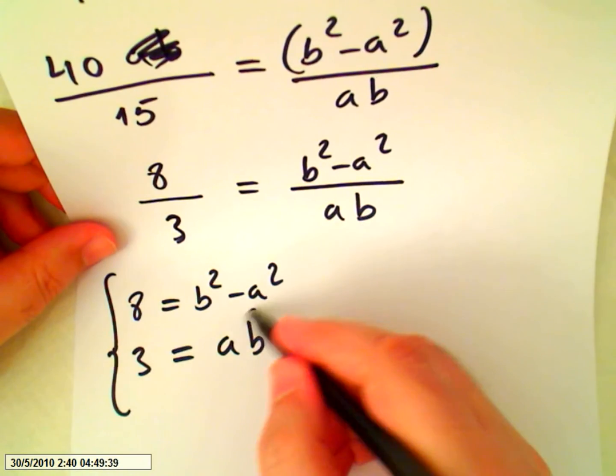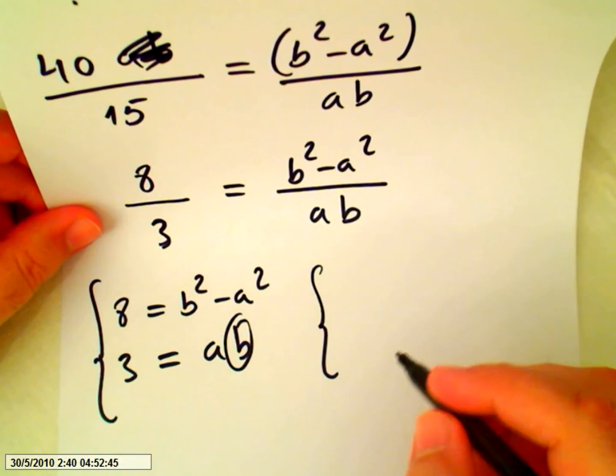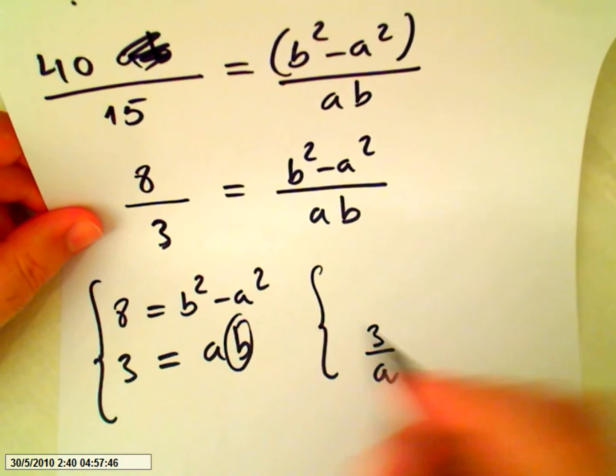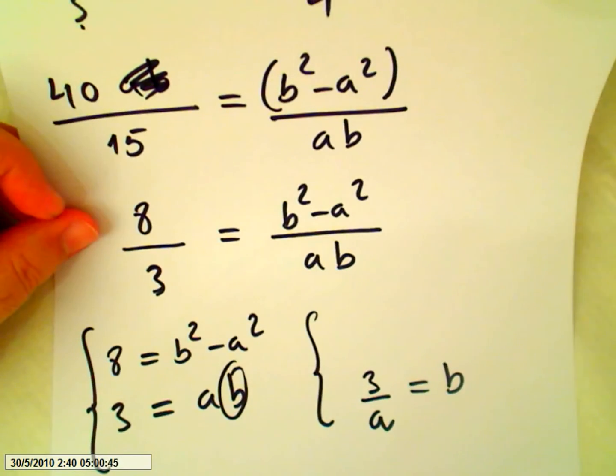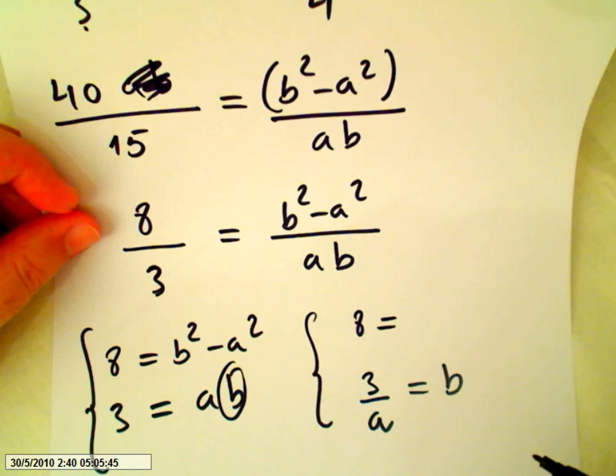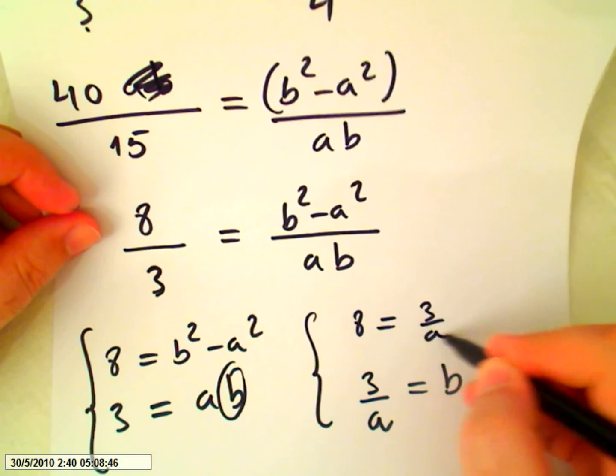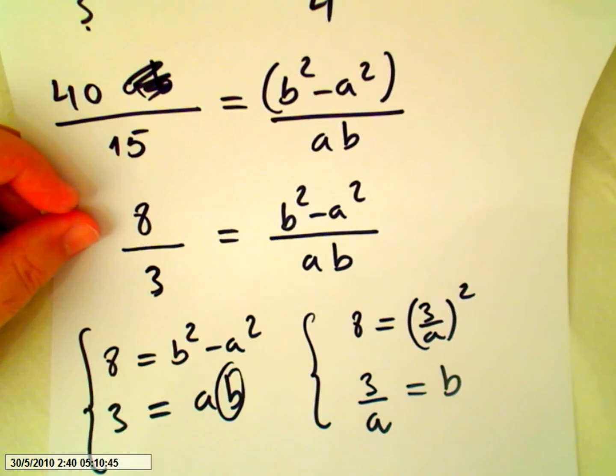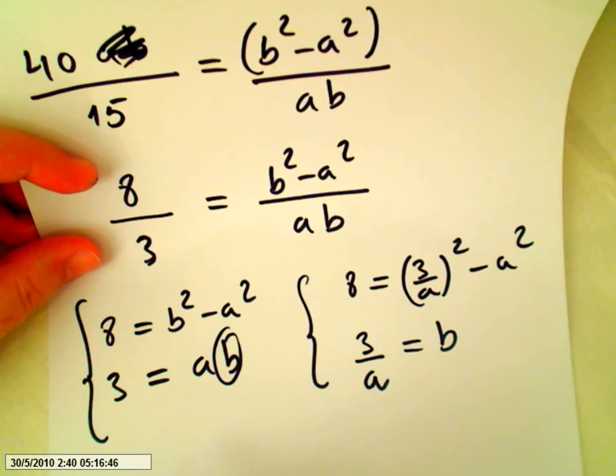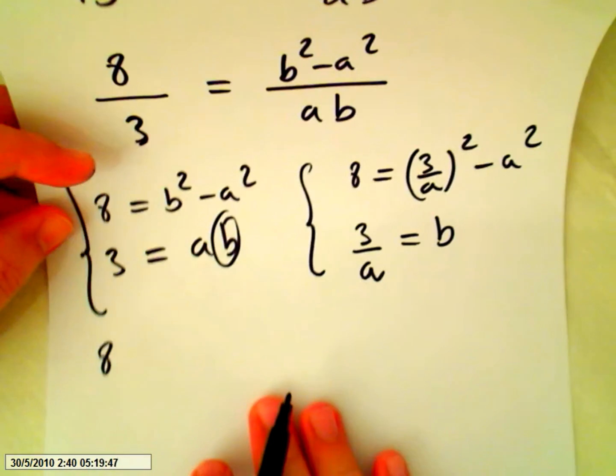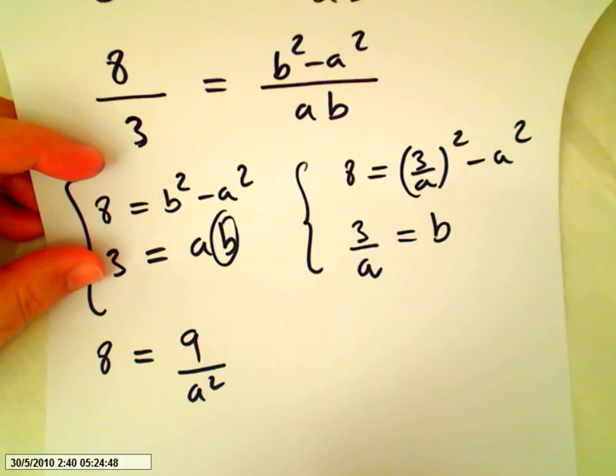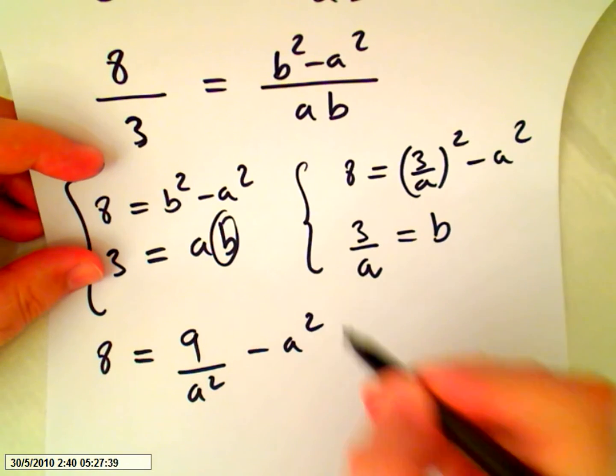Now we make b the subject. So 3 over a equals b, and we can do back substitution. 8 equals 3 over a squared minus a squared. So we have 8 equals 9 over a squared minus a squared.